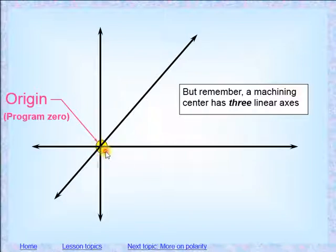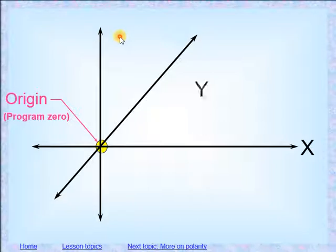All right so our origin point, when we look at it in that graph, is just a nice two dimensional look. But a CNC, you've got to remember, is three axis, so they're going to be working with a third axis. We looked at the X and Y, but we're also going to add in now a Z. So we have a Z axis, up and down is our Z axis. So when we have our points here, we're going to have our grid over in this area. But we also have Z.